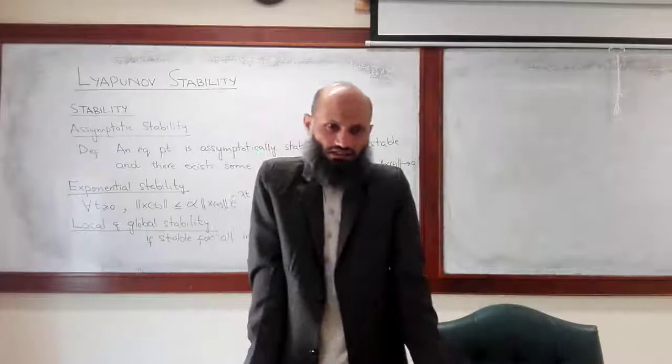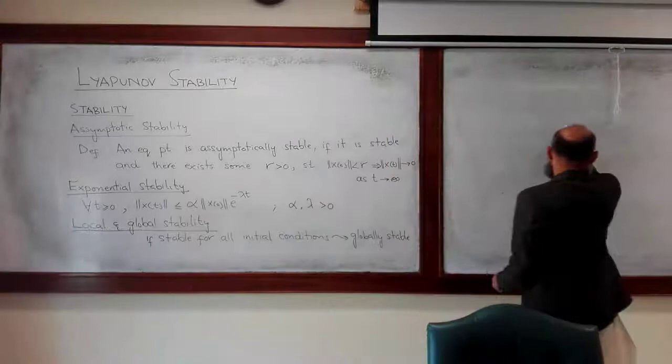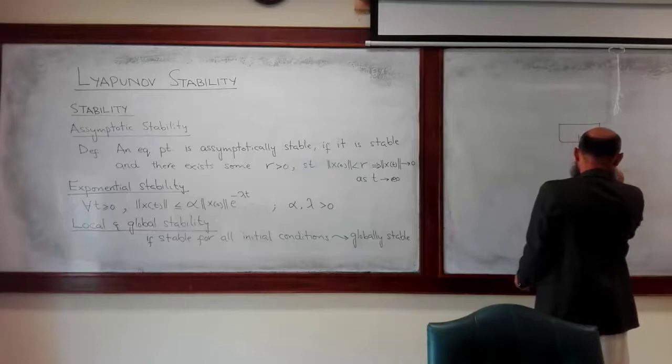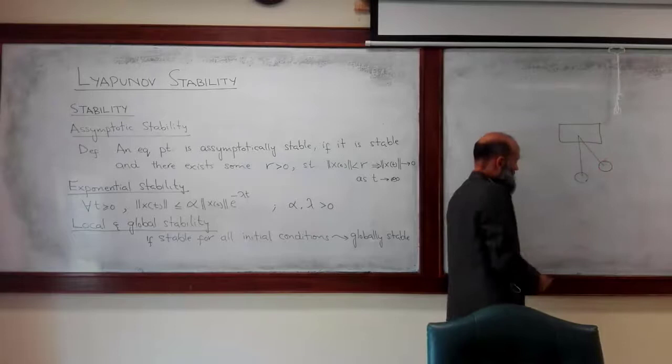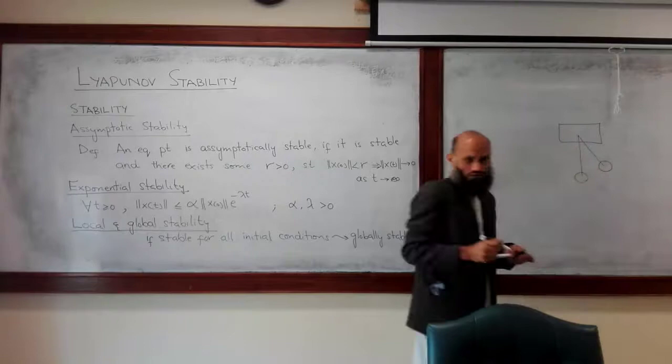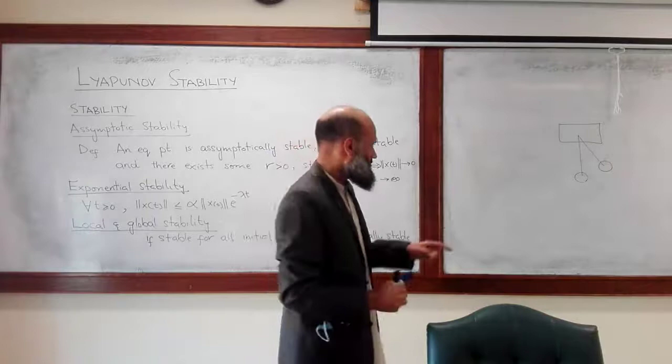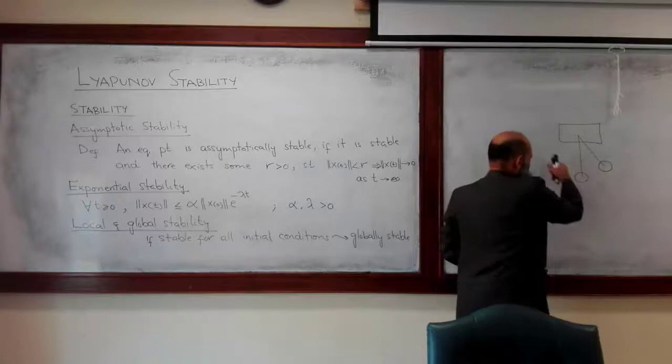For example, consider a simple pendulum. At the lowest point it has the lowest energy. It will oscillate about this equilibrium point, and if there is also friction, then during this motion it will lose its energy and will finally converge to the equilibrium point. If there is no friction, then it will continue oscillating.